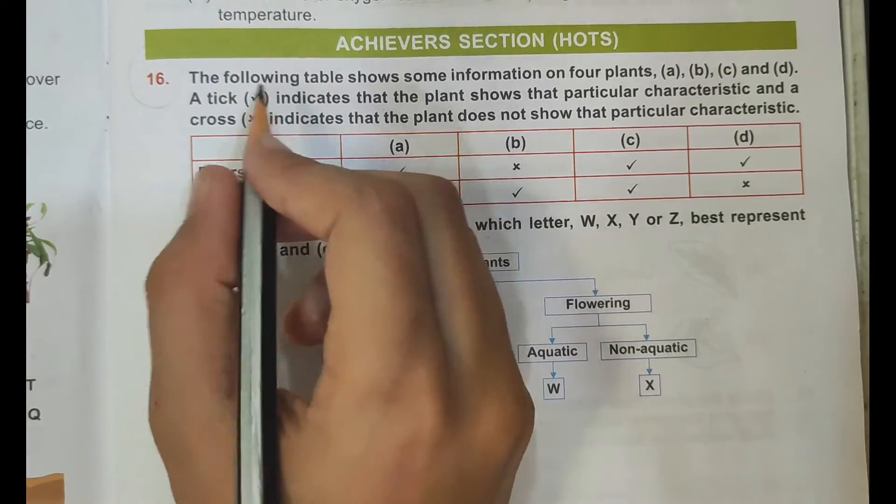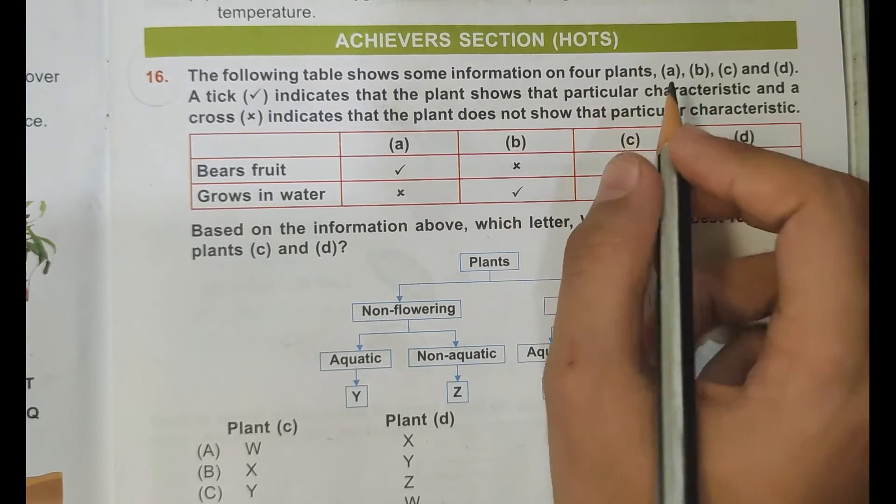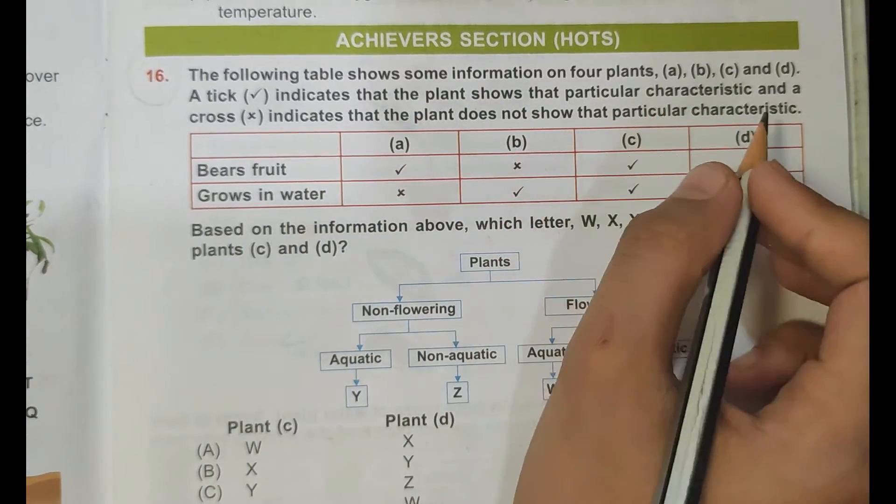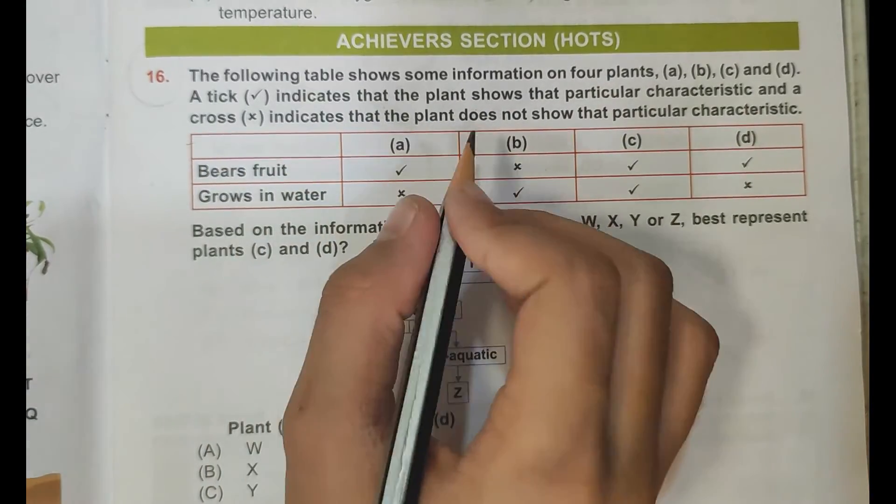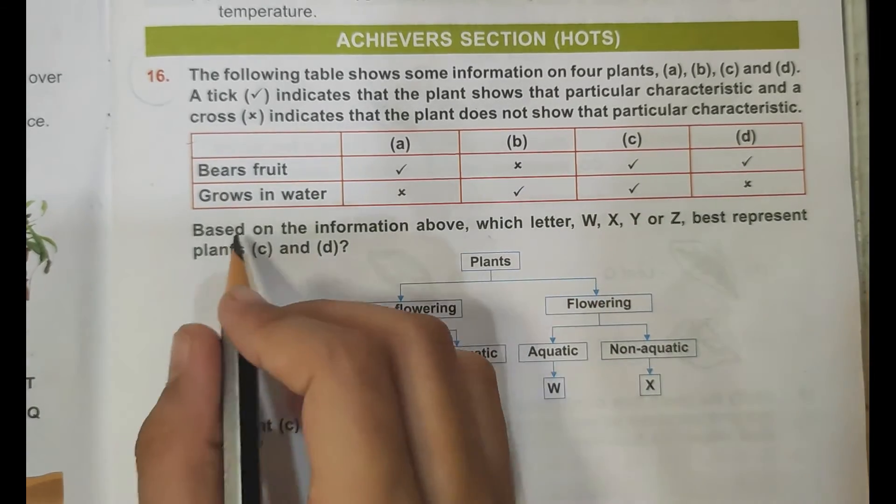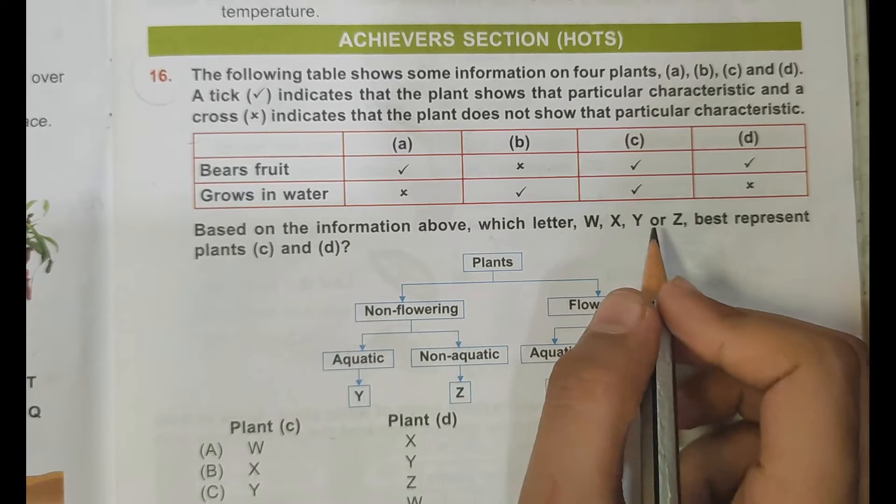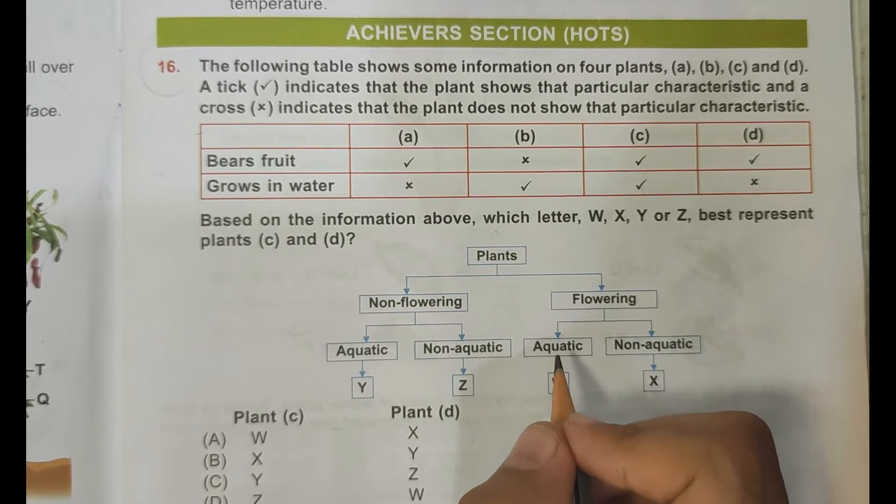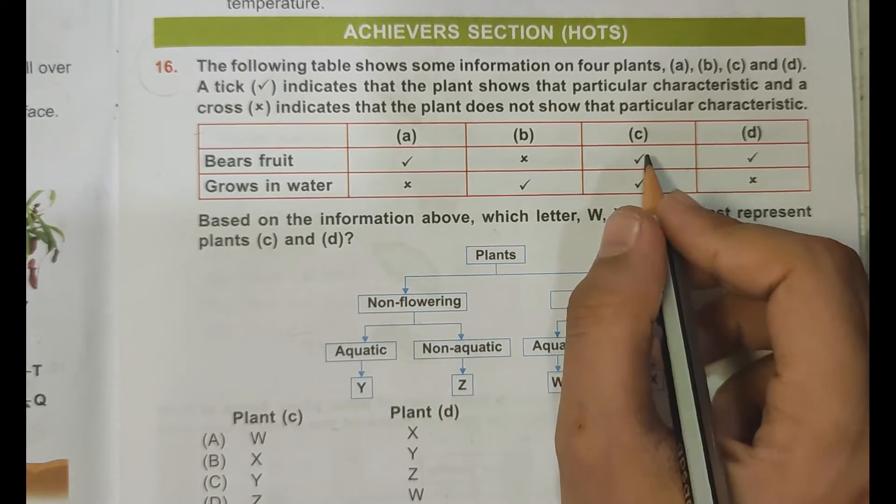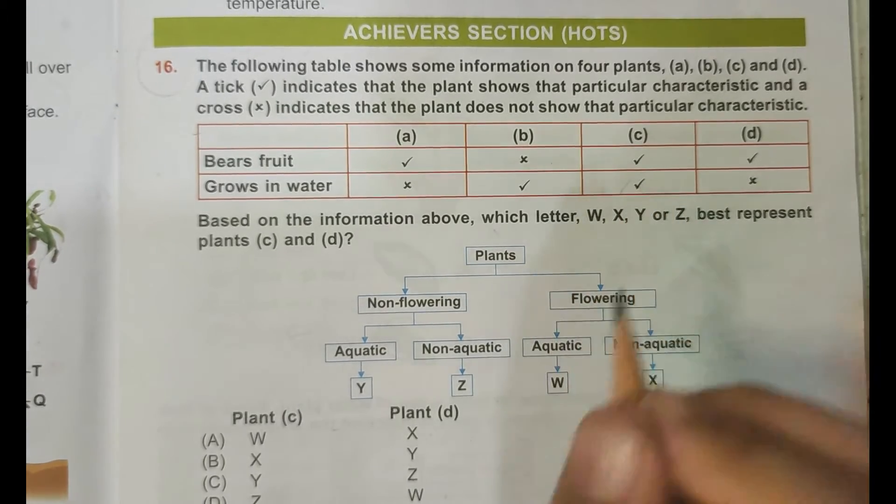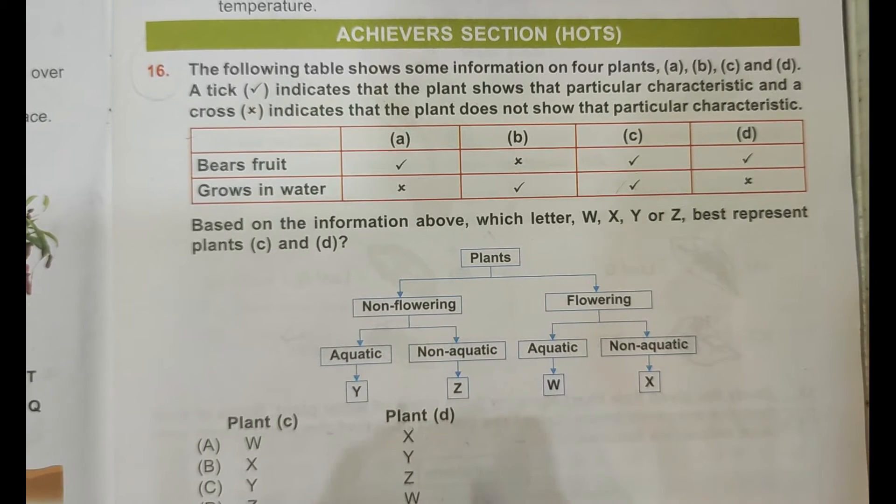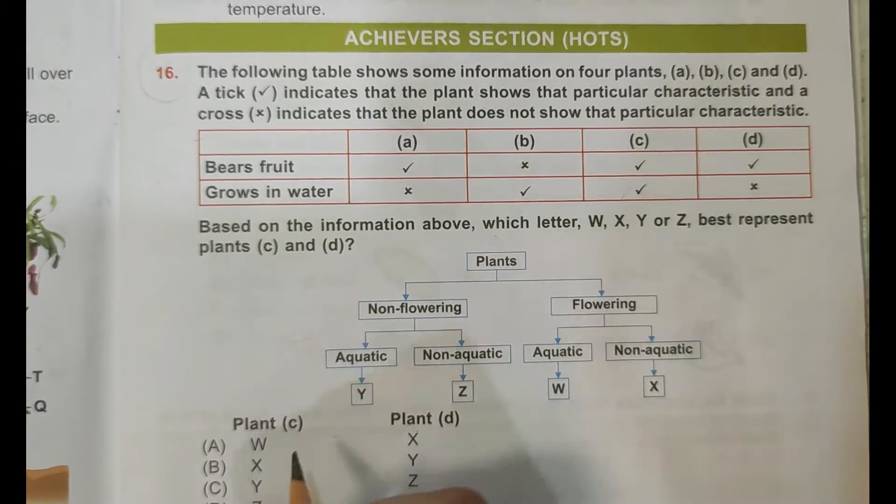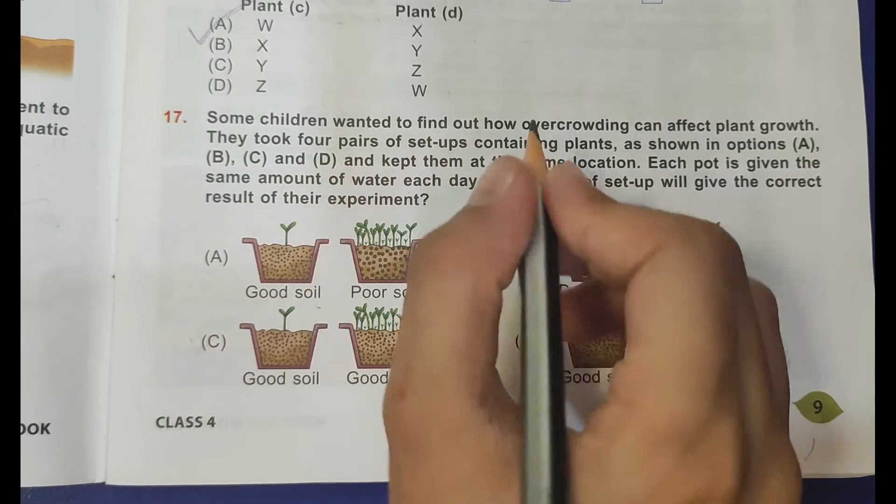Question 16: the following table shows some information on four plants A, B, C, D. A tick indicates that the plant shows the particular character and a cross indicates that the plant does not show the particular character. Based on the information above, which letter W, X, Y, or Z best represents plant C and D? Plant C, first is W. So W is a flowering plant and it is aquatic. If it's a flowering plant means it bears fruit and it is aquatic, so here is also tick, so W is C. Then here is X, plant D. It is a flowering plant means it bears fruit, and it is non-aquatic and here is cross. So X is the correct answer.